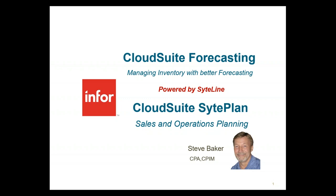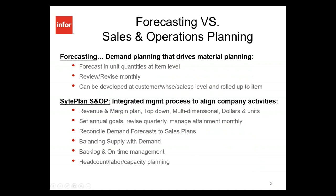We're going to be covering two products, and I want to differentiate between them as there can be some confusion. There's the Cloud Suite forecasting application and then the Cloud Suite Site Plan, which is sales and operations planning. With different companies having different terminologies in the world of demand planning and balancing supply and demand, let me clarify how these two products fit in. The forecasting product is really just for the demand planning side — what material planners would work with using the MRP or APS system. Its primary focus is developing a unit forecast that drives the material planning system, typically revised each month. It deals with unit quantities at the SKU item level, but it can also develop forecasts based on customers, warehouse, or salespeople.